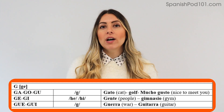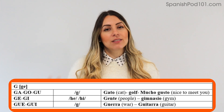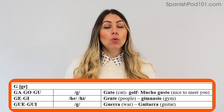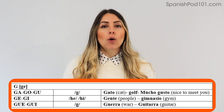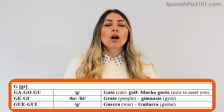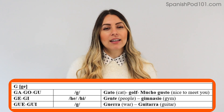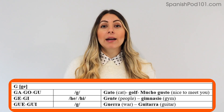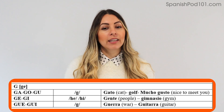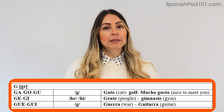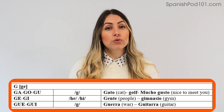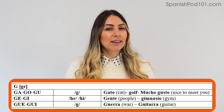The next one is GE — the letter G. We have different pronunciations depending on what vowel follows. For G-A, G-O, G-U, we say the hard G sound: ga, go, gu. For example: gato, golf, mucho gusto — here it is a G sound.